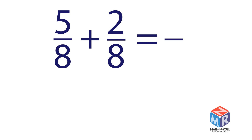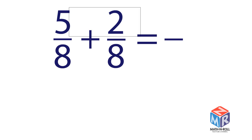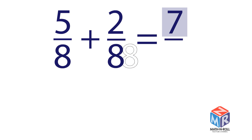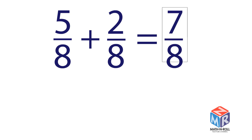Now add the fractions. Add the numerators and keep the denominator the same. So 5 eighths plus 1 fourth is equal to 7 eighths.